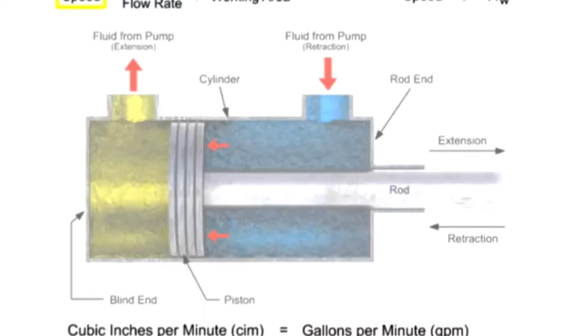In order to calculate speed in inches per minute, we need the volumetric flow rate expressed as cubic inches per minute. To convert from gallons per minute to cubic inches per minute, multiply the volumetric flow rate in gallons per minute by 231.